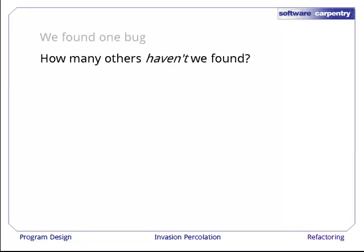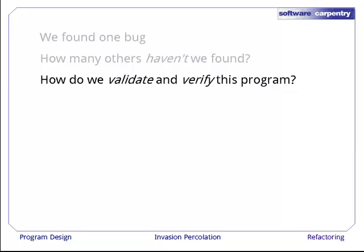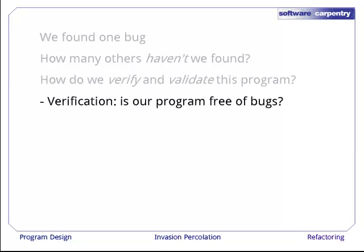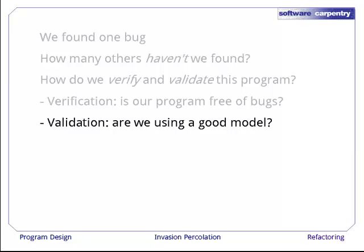But how many others haven't we found? More generally, how do we validate and verify a program like this? Those two terms sound similar, but mean different things. Verification means, is our program free of bugs, i.e., did we build the thing right? Validation means, are we implementing the right model, i.e., did we build the right thing?